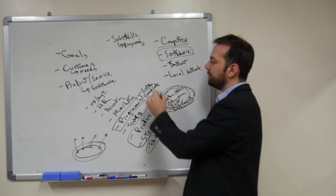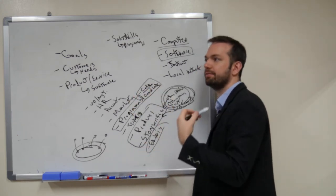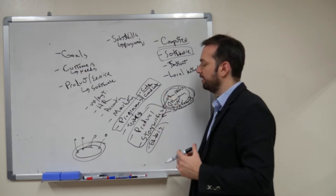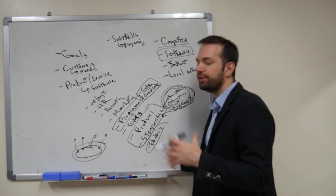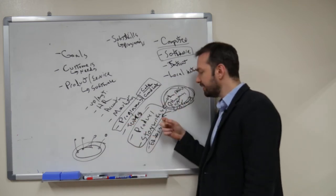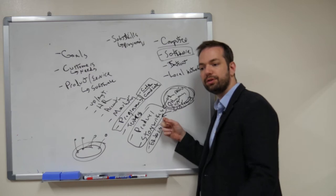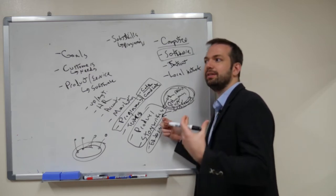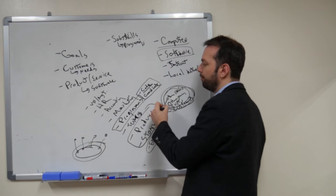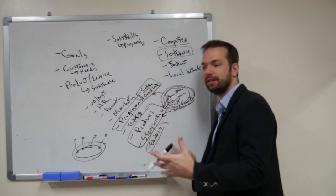Programmers need access to information about coding, access to information about the platform, access to other programmers or other information in the system, and also access to what the story writers and producers are intending — what is the goal of the story, and what emotion or feeling should the programmers be projecting in certain scenes?